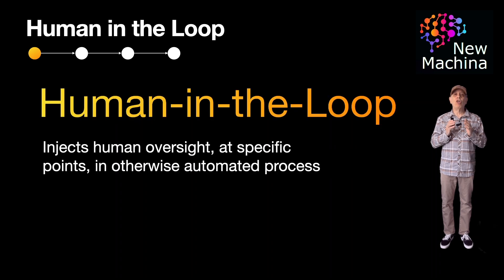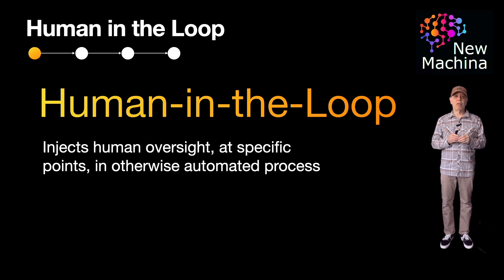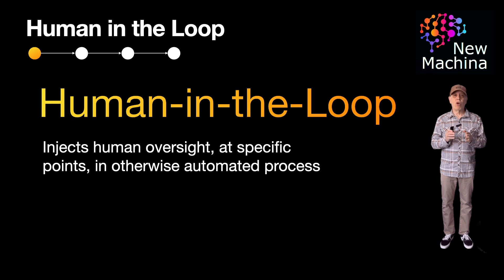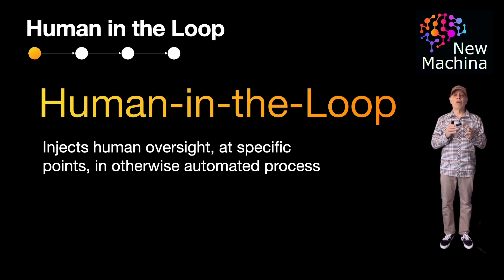Now let's define human-in-the-loop agents. A human-in-the-loop agentic system injects human oversight at specific points in an otherwise automated process. This could involve approvals, overrides, or guidance when an agent hits uncertainty, risk, or ambiguity. Think of it like cruise control, where the agentic system is steering, but with you always there, ready to take over if required.